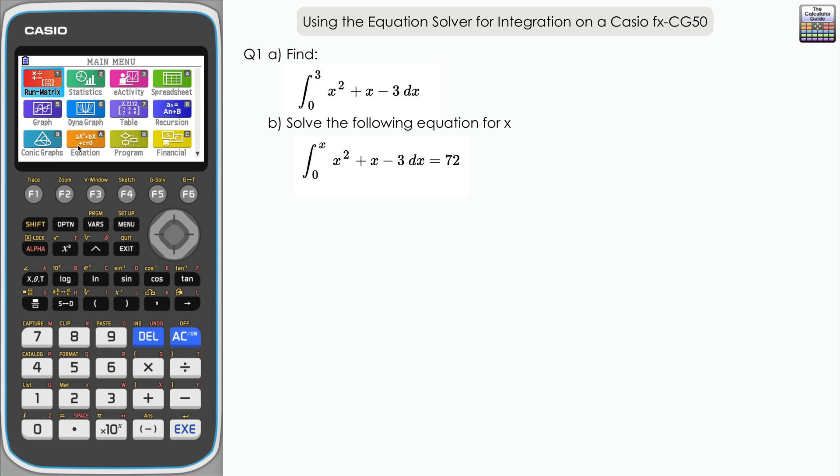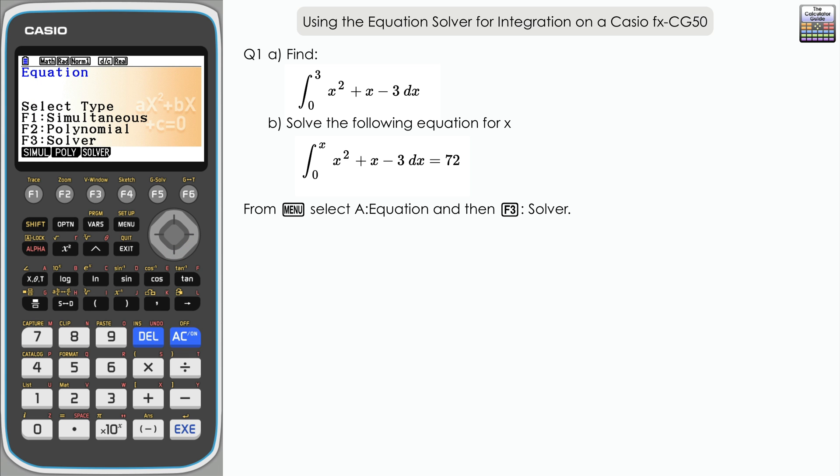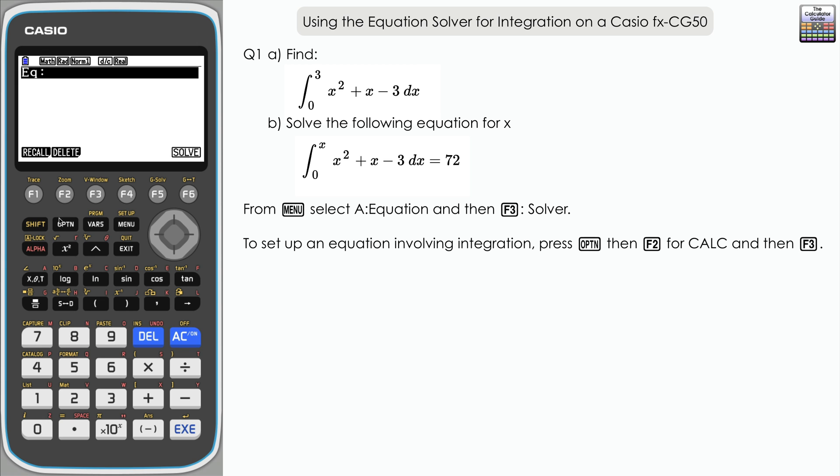Let's go to the equation solver. It's down to equation from the menu, and then F3 for solver. We want to set up the equation as written in part A. We're going to start by bringing in the integration function, which is available in option. Press option, then F2 for calc, and then the integration option is available if you press F3.